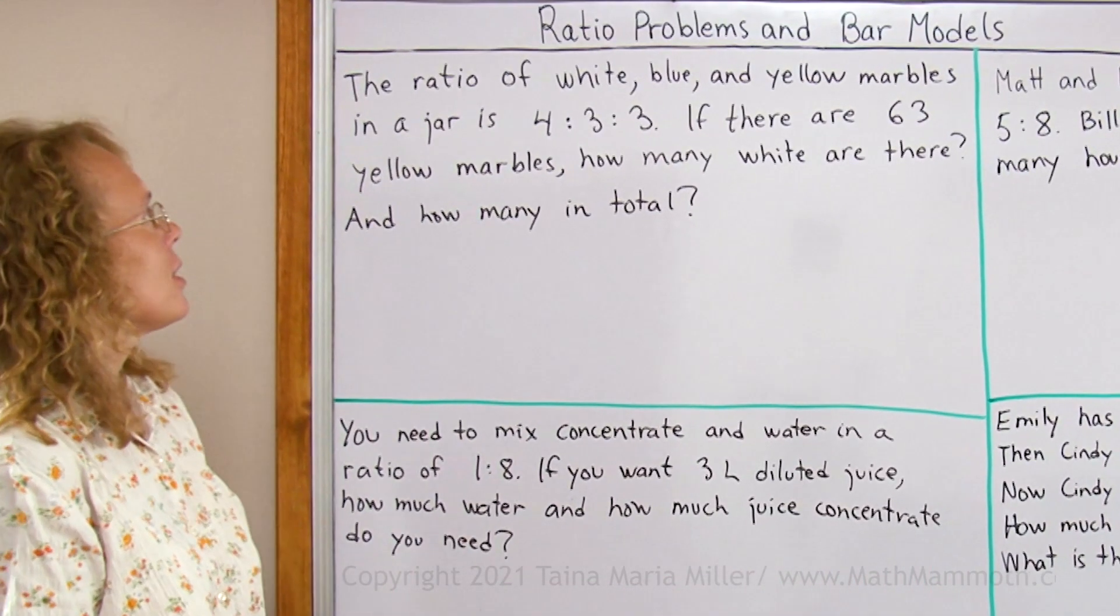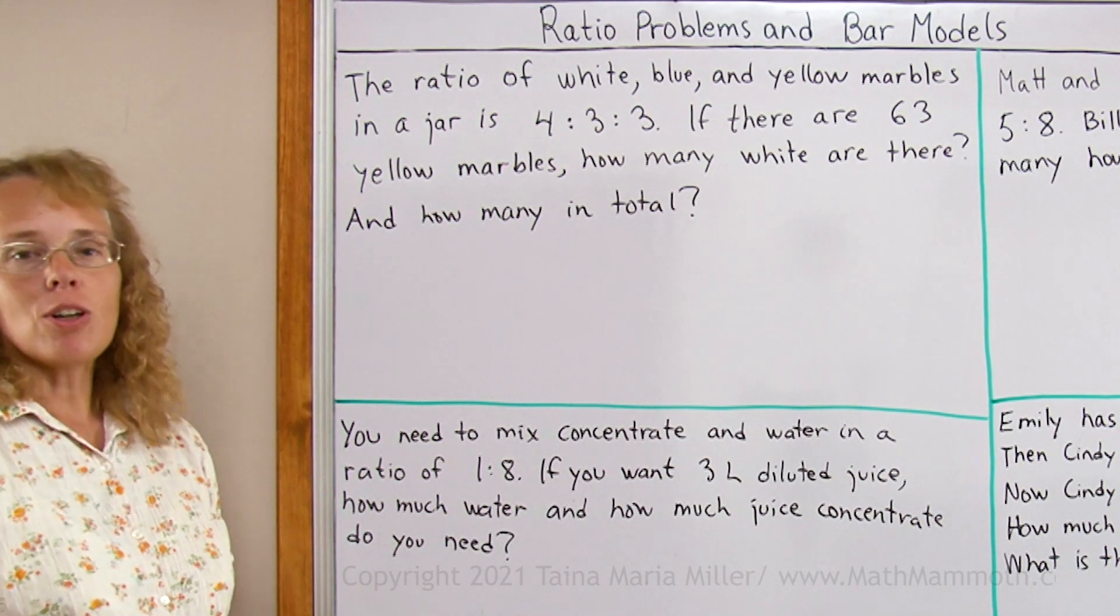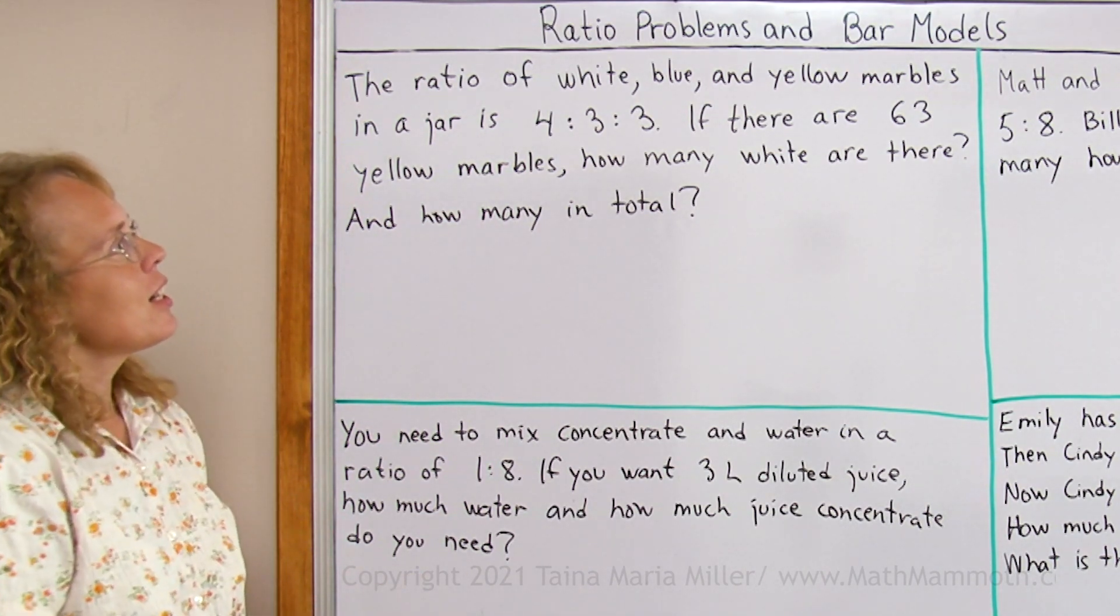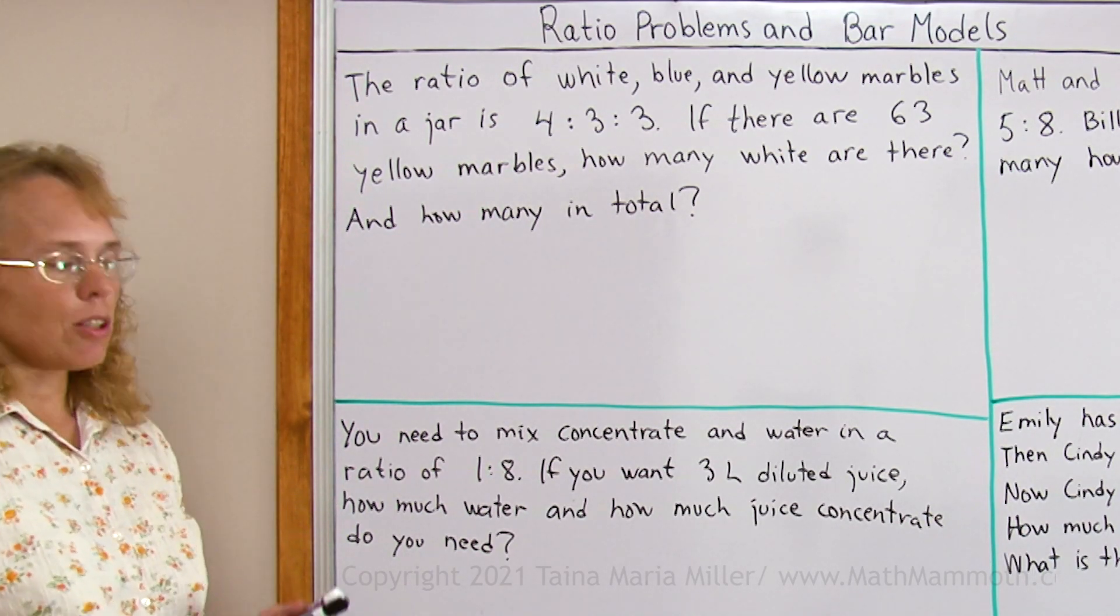The first problem is: the ratio of white, blue and yellow marbles in a jar is 4 to 3 to 3. And if there are 63 yellow marbles, how many white ones are there and how many in total?